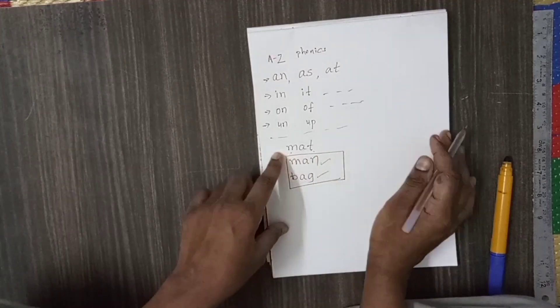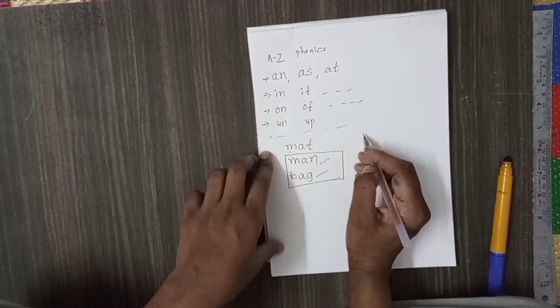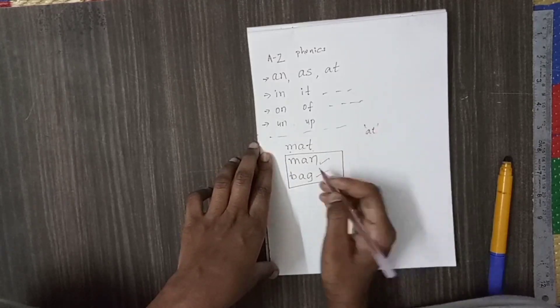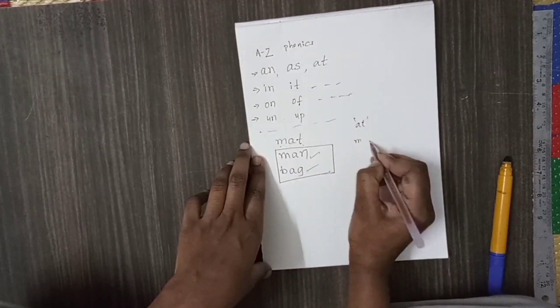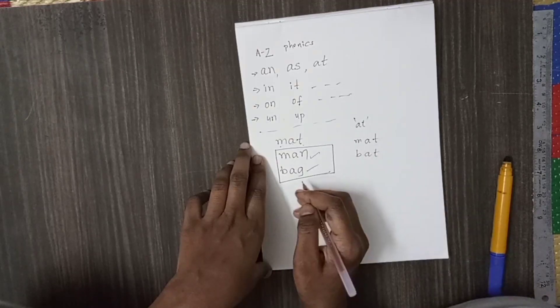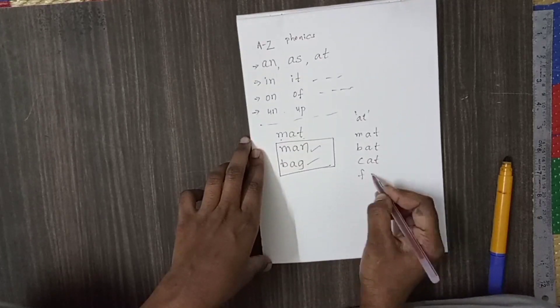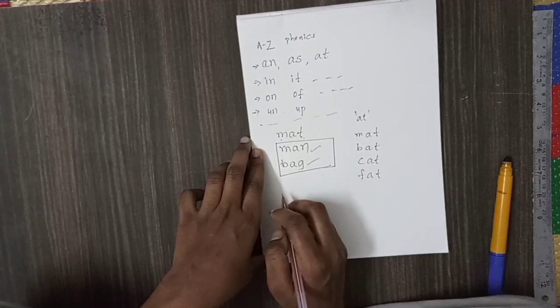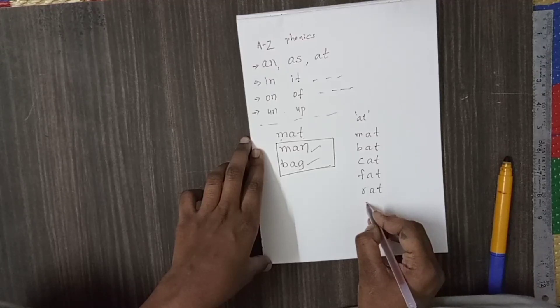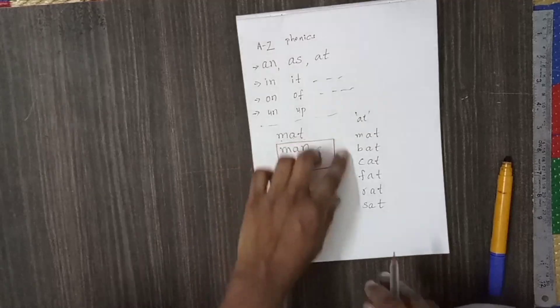M, A, T. M, A, T, BAT. BAT. M, A, T. Like this we should give them practice.